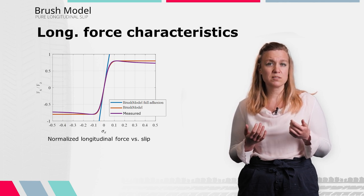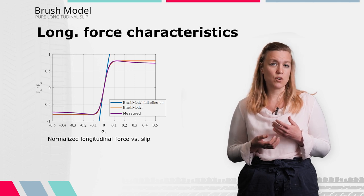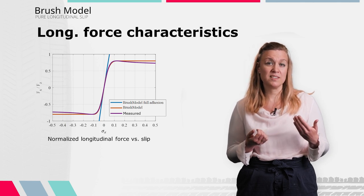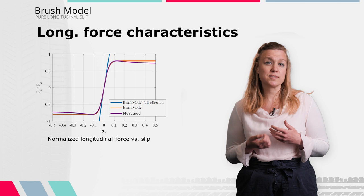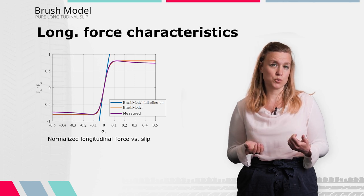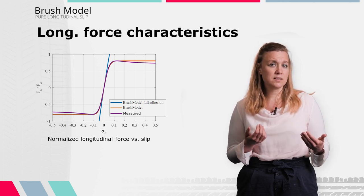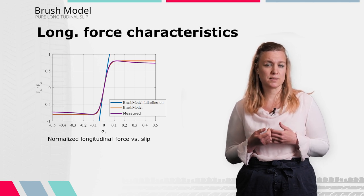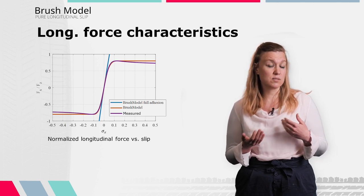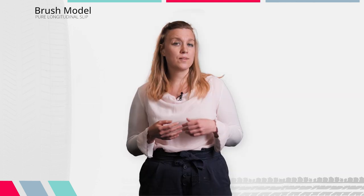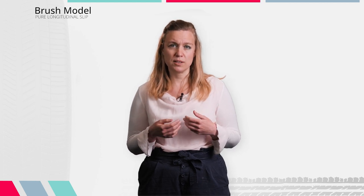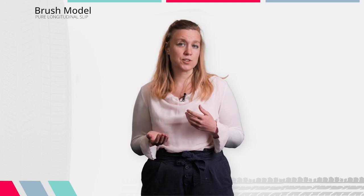The longitudinal force characteristics shown in the last figure are valid for a constant vertical force or load. In the brush model as derived in this lecture, the influence of the vertical force is a linear one — meaning that when doubling the load on the tire, the resulting longitudinal force also doubles. In reality, the vertical force shows a digressive influence: with increasing vertical force, the longitudinal force increases too, but to a lesser extent. The main reason is that the contact patch size and pressure distribution do not change linearly with vertical load.